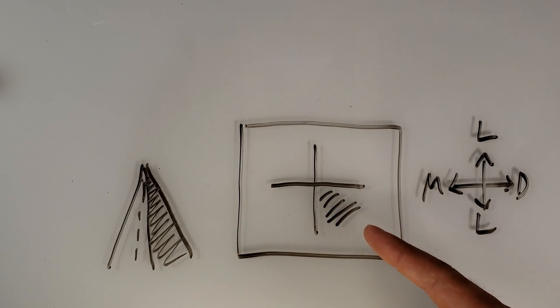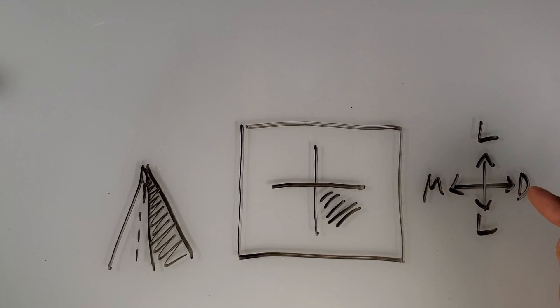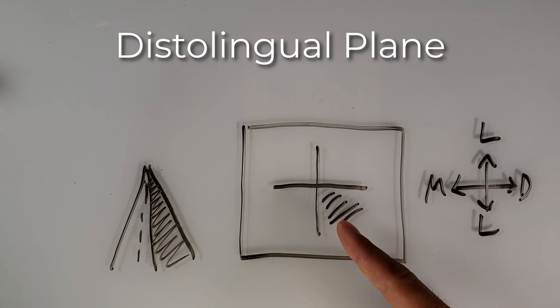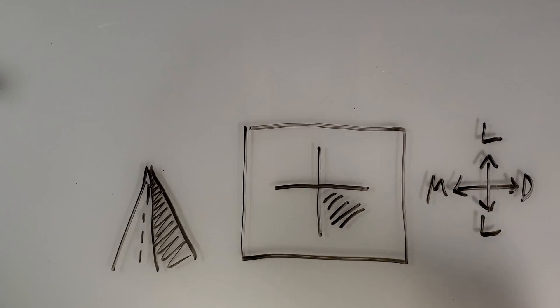So for what's shaded in, we're looking at disto, because we always start with the proximal, and then lingual. So this would be the distolingual plane of the cusp, because the cusp, it only has one cusp.